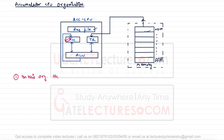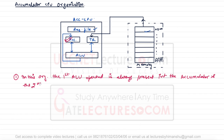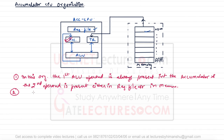Point one: the first ALU operand is always present in the accumulator. The second operand is present either in the register file or in memory. Point two: after the data manipulation, the result is always placed inside the accumulator.